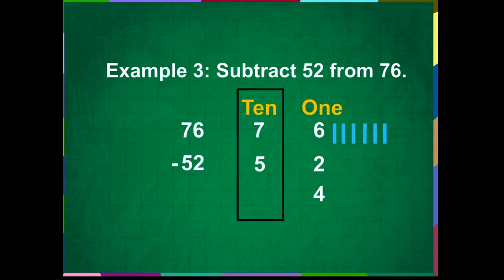Now subtract the tens. Draw 7 lines and now cut 5 lines from it. Count the remaining lines. We get 2. Write 2 in the tens place. So, the difference of 76 minus 52 is 24.